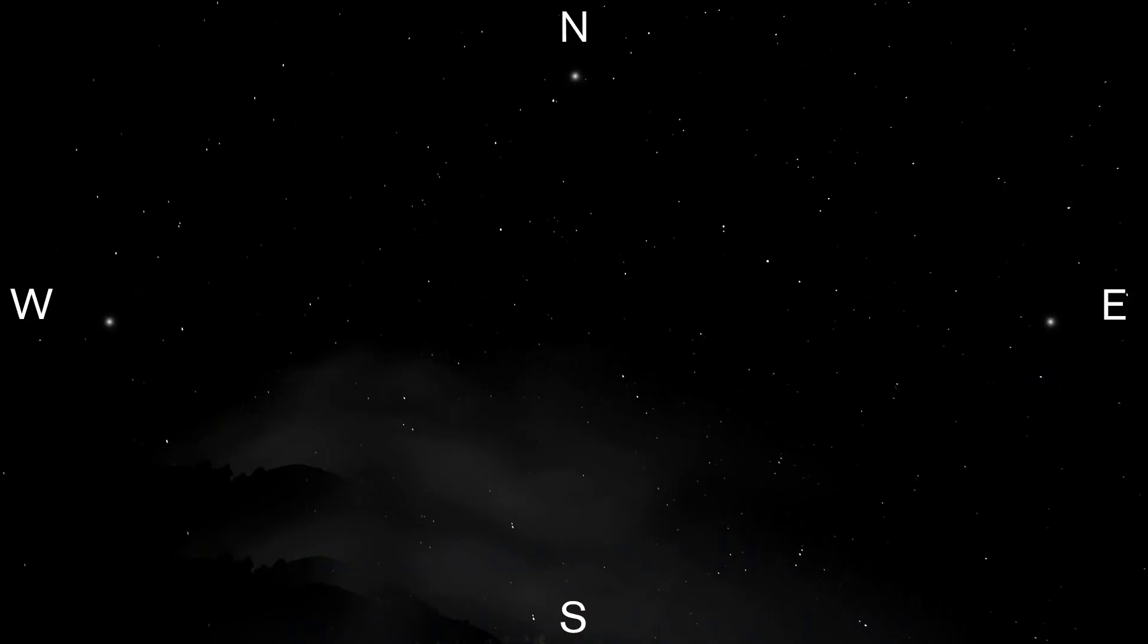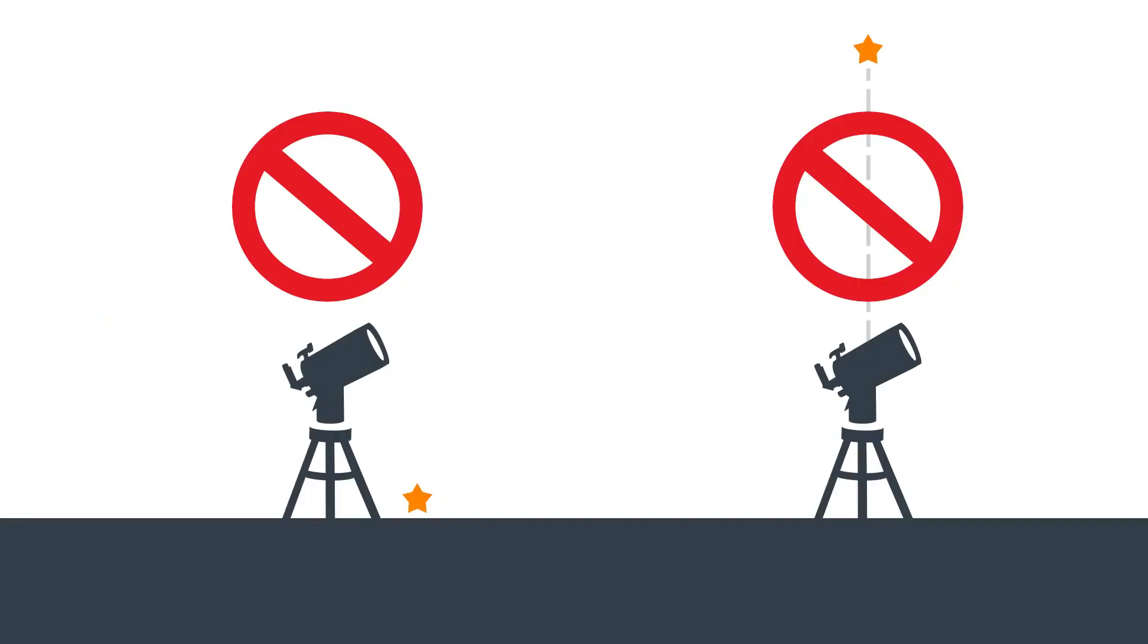Now, let's choose our three stars for alignment. Using your naked eye, look up and locate any three bright objects. We recommend picking a bright star in the west, another in the east, and the third in the north or south. Make sure you have a clear view of each object. We recommend avoiding stars on the horizon and near the zenith, straight overhead.